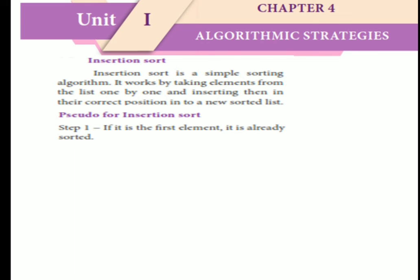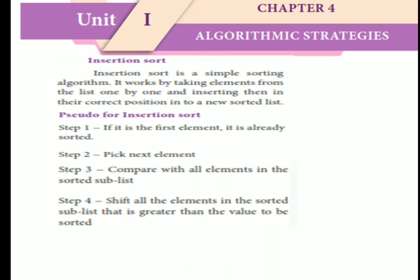Pseudo code: Step 1 - If it is the first element, it is already sorted. Step 2 - Pick the next element. Step 3 - Compare with all elements in the sorted sub-list. Step 4 - Shift all elements in the sorted sub-list that are greater than the value to be sorted. Step 5 - Insert the value.